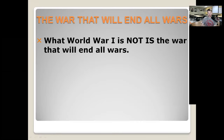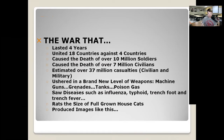World War One is a war that lasts four years. It unites 18 countries against four countries, causes the death of over 10 million soldiers, 7 million civilians die, and there are 37 million casualties — casualties being dead and wounded combined. That's 17 million people dying in this war. It ushers in a brand new level of weapons: machine guns, grenades, tanks, poison gas. It's almost like World War One is the first modern war.